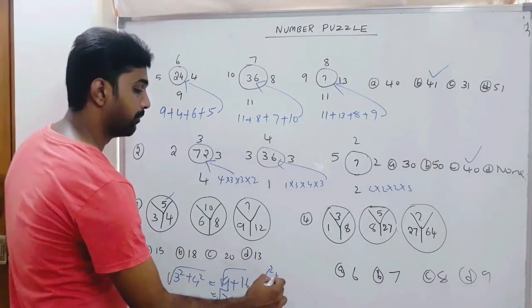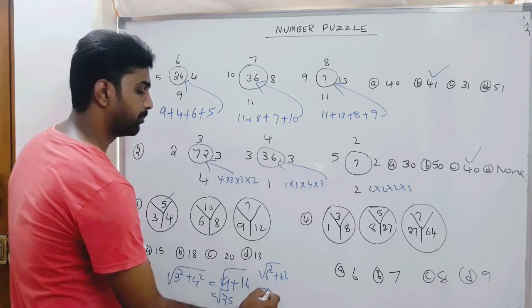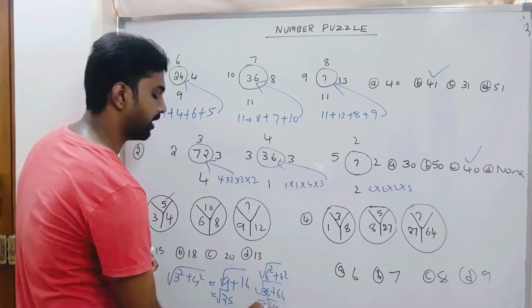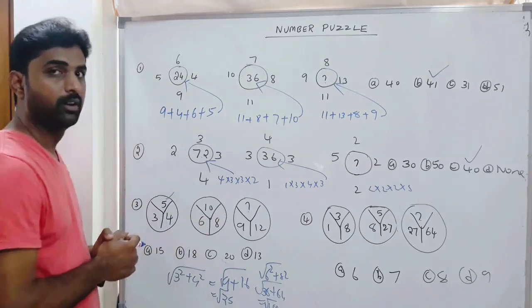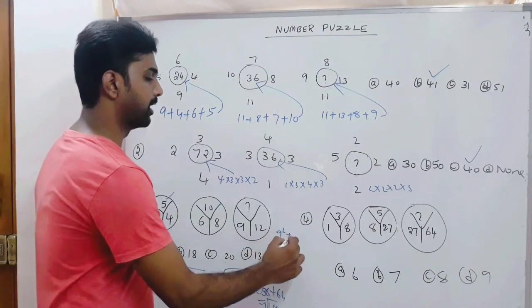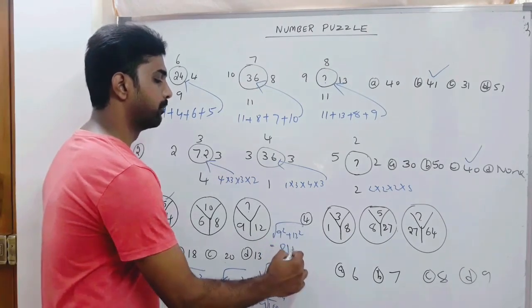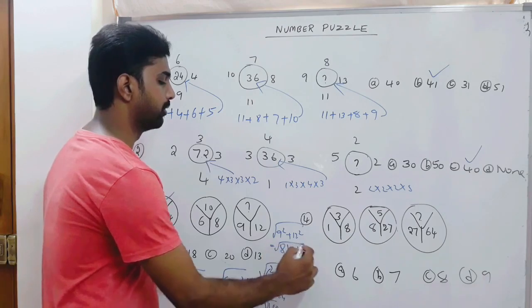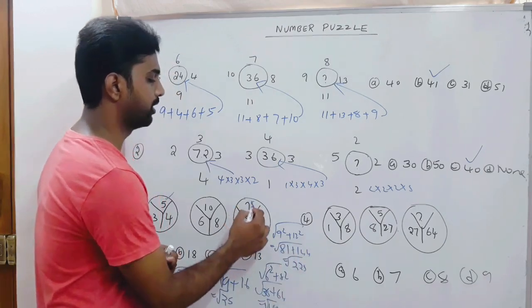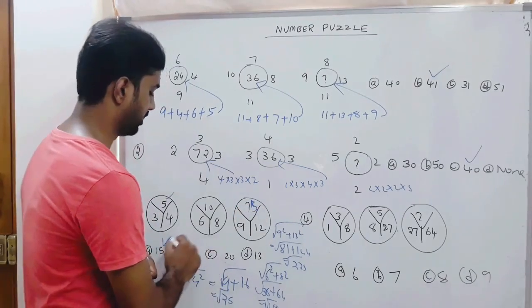Continuing the pattern: 6 squared plus 8 squared = 36 + 64 = 100, and square root of 100 is 10. Likewise, 9 squared plus 12 squared = 81 + 144 = 225, and square root of 225 is 15. So 15 is the right answer.